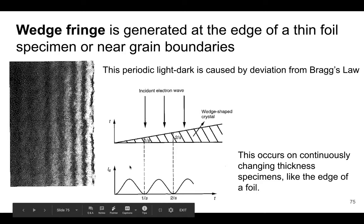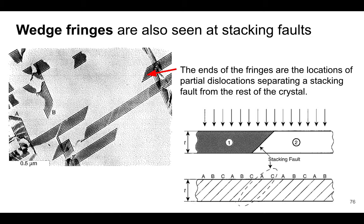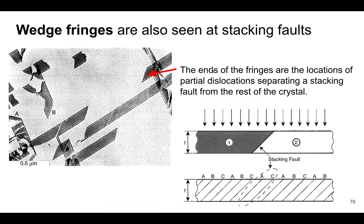You can see the wedge fringes here, corresponding to the intensity shown below. We can also see these same wedge fringes as a result of stacking faults. A stacking fault is essentially an error in the stacking sequence — we should have A, B, C, A, B, C, but in this case B is missing. The edges of those fringes are the locations of partial dislocations that separate the stacking fault from the rest of the crystal.